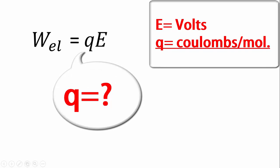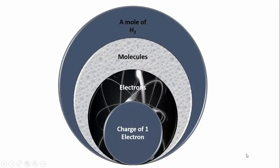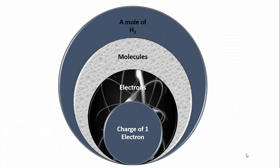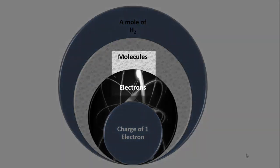It's pretty simple. In order to calculate the charge transferred per mole of hydrogen, we have to see the number of molecules per mole of hydrogen, then number of electrons per hydrogen molecule, then charge per electron.